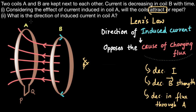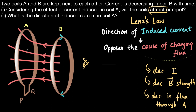The second question is: what is the direction of induced current in coil A? To figure out the direction of induced current, we can again use Lenz's law, which says the direction of induced current should oppose the cause of changing flux. If we know the direction of the magnetic field lines generated by coil A, we can use the right-hand curl rule to figure out the current direction. The field lines generated due to coil A must oppose the flux.